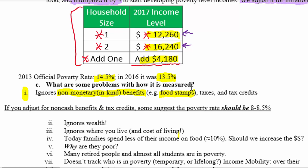The way we measure poverty also ignores taxes. It ignores that some people earn money and then have taxes removed. It also ignores tax credits like the child tax credit — a refundable credit for each child in a household — and the earned income tax credit, which adds to household income. Both of these could bring income into a household but are not counted in the poverty figures.